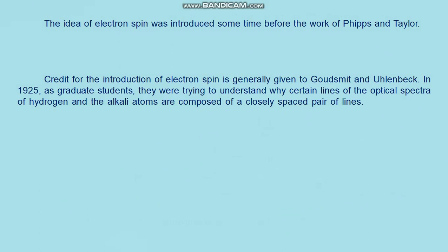The idea of electron spin was introduced before the work of Phipps and Taylor. In the final sentence of a 1921 paper on the scattering of X-rays by atoms, Compton had written: 'May I then conclude that the electron itself, spinning like a tiny gyroscope, is probably the ultimate magnetic particle.' This was more speculation than conclusion, and Compton apparently never followed it further. Credit for the introduction of electron spin is generally given to Goudsmit and Uhlenbeck in 1925, who as graduate students were trying to understand why certain lines of the optical spectrum of hydrogen and the alkali atoms are composite pairs of closely spaced lines.